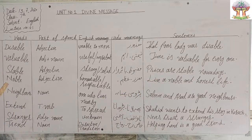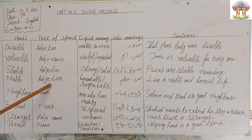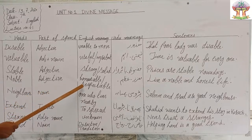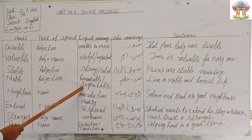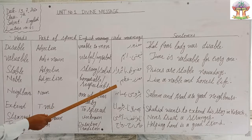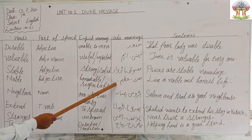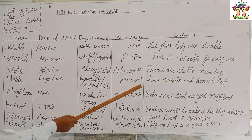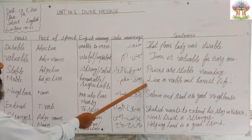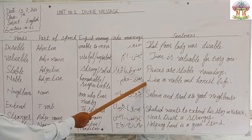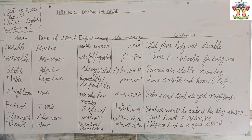Next word is 'noble.' It is an adjective in parts of speech. English meaning: honorable or respectable. Urdu meanings: guazis, azim. Sentence: 'Live a noble and honest life.'